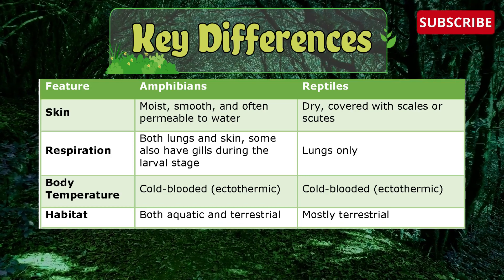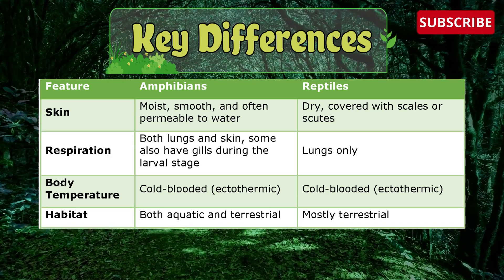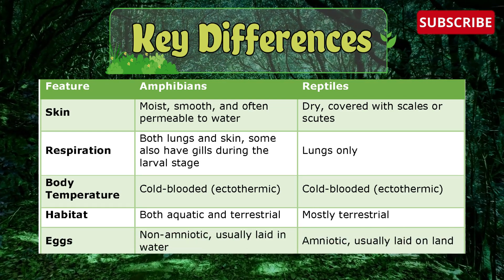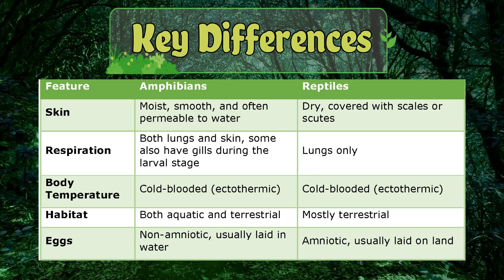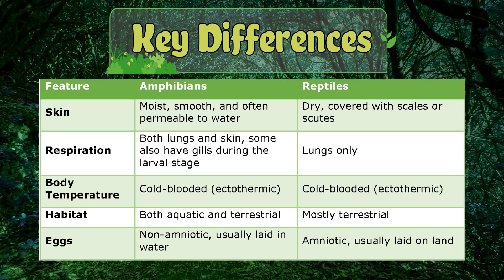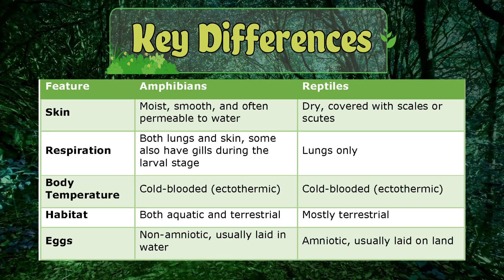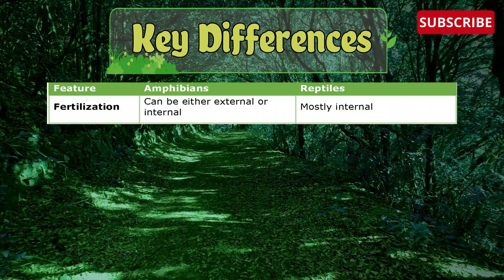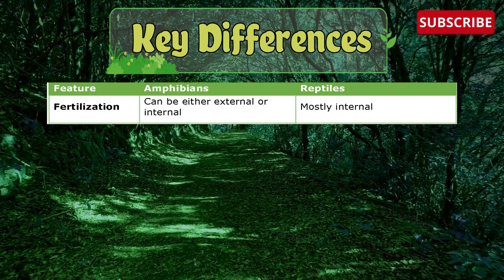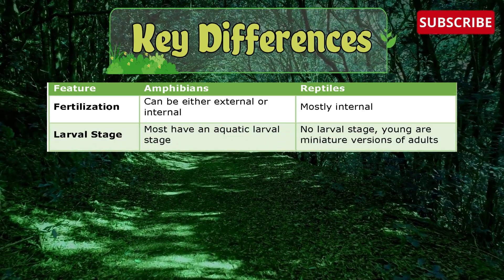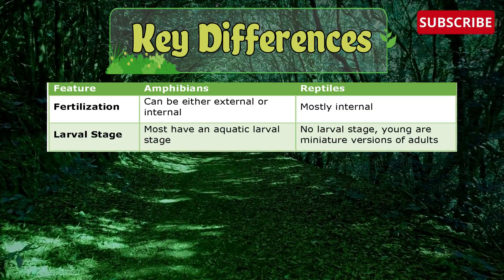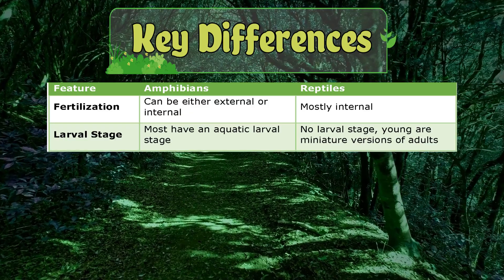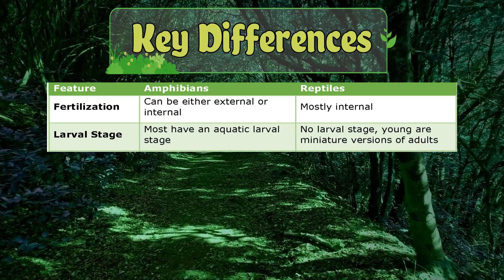Habitat of amphibians is both aquatic and terrestrial, whereas reptiles are mostly terrestrial. Amphibian eggs are non-amniotic and usually laid in water, whereas reptile eggs are amniotic and usually laid on land. Fertilization in amphibians can be internal or external, but in reptiles it is mostly internal. Most amphibians have an aquatic larval stage, whereas in reptiles there is no larval stage — the young are miniature versions of adults.